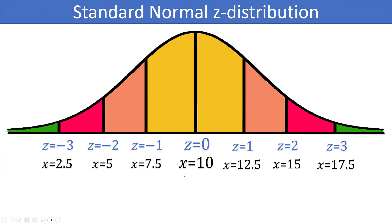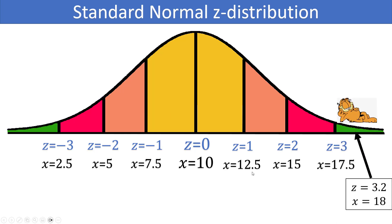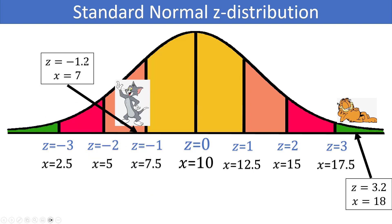Looking back at our standard normal distribution with the X values tagged on — since X has a mean of 10 and a standard deviation of 2.5, we count by 2.5s going up or down. Garfield had a Z score of 3.2 because his weight was 18 pounds, and Tom has a Z score of negative 1.2 with a weight of 7 pounds. Tom is much closer to the typical weight of a cat than Garfield — probably because he spends a lot of his time chasing Jerry around and is in better shape.